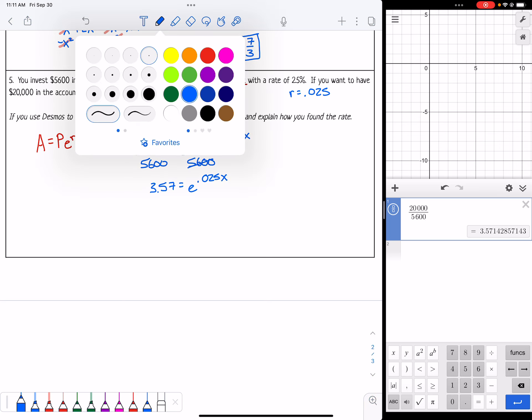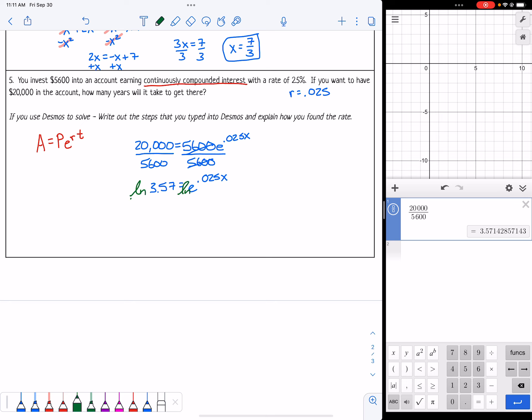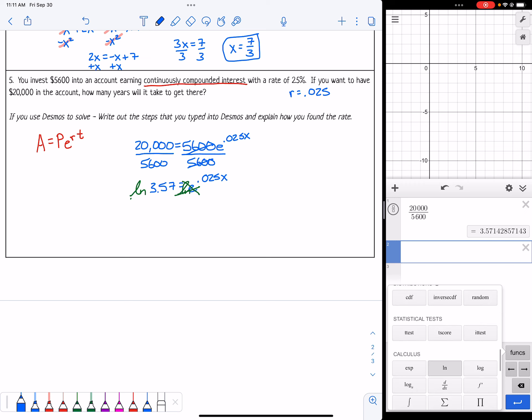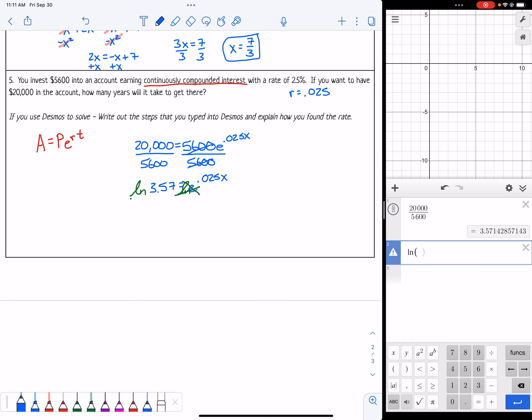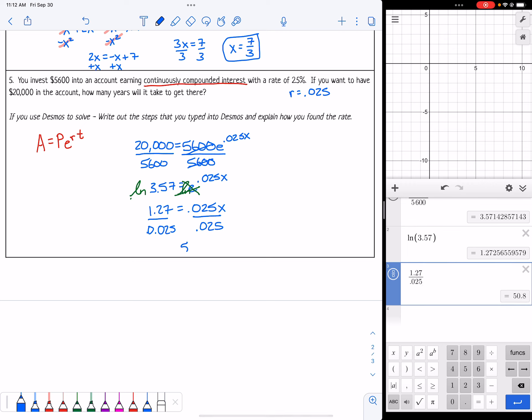20,000 divided by 5,600 gives me 3.57. Then the 5,600 cancels out, and we have e to the 0.025x power. If we take natural log of both sides, natural log of e just cancels out. We have natural log of 3.57, so we can type that in the calculator. That's about 1.27 equals 0.025x. Then we just have to divide by 0.025. So 1.27 divided by 0.025 leaves us with about 50.8 years.